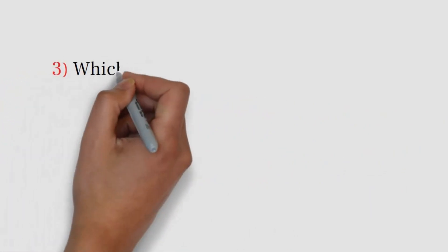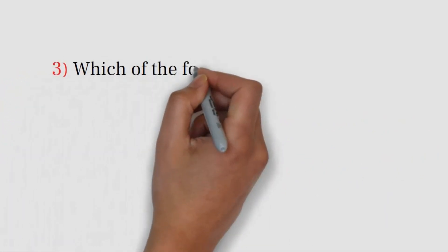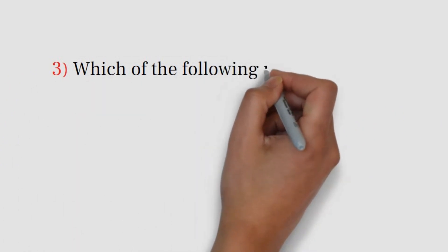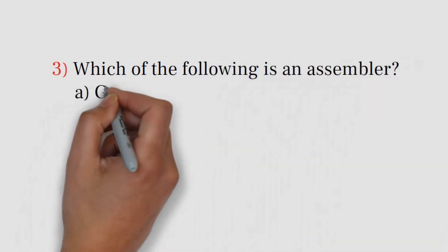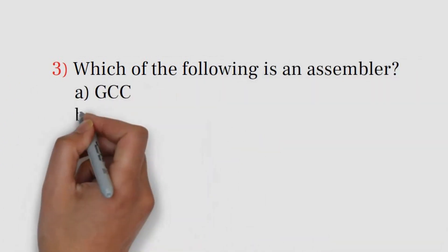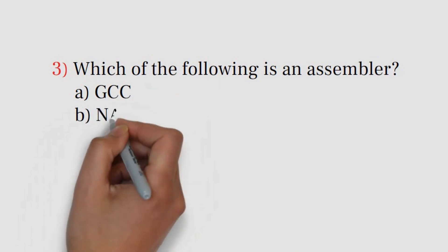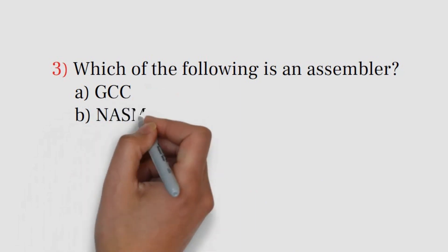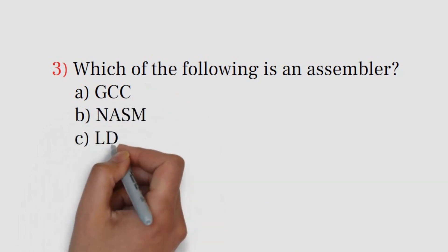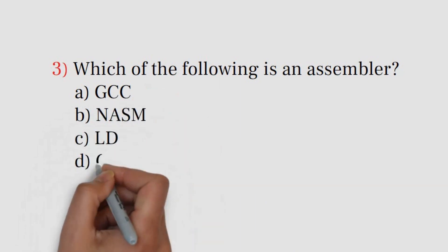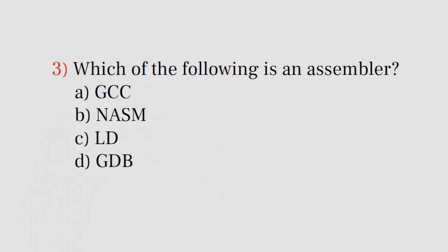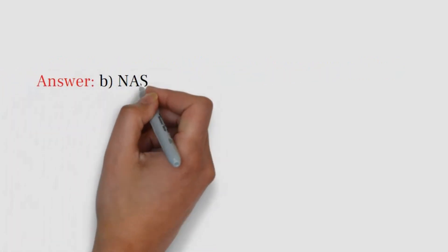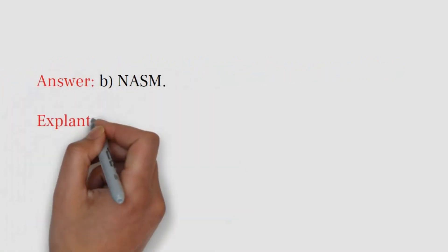Question number 3. Which of the following is an assembler? A. GCC. B. NASM. C. LD. D. GDB. Answer: B. NASM.